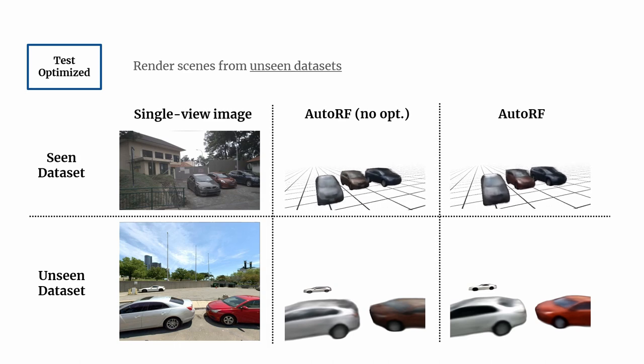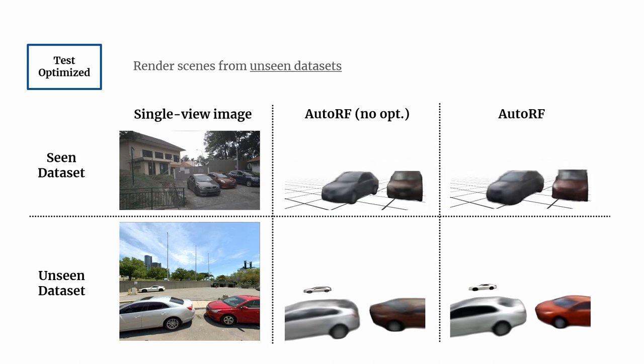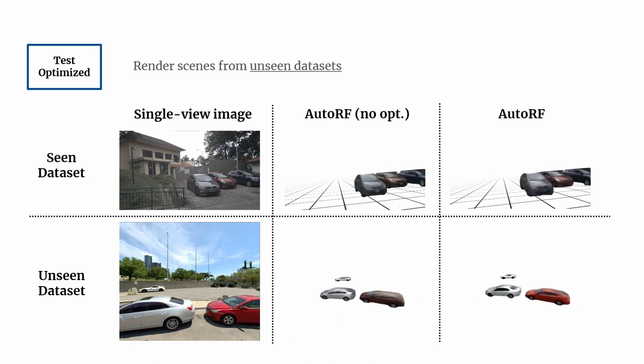At test time, we further optimize the shape and color codes as well as the object pose in order to refine the renderings. This allows AutoRF to pick up object details and even extend to novel datasets with highly different settings like brightness or scene composition.